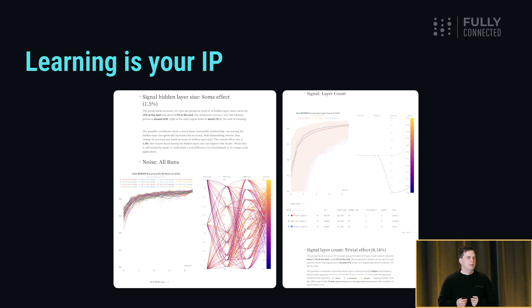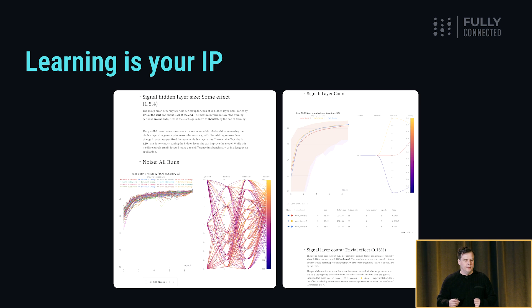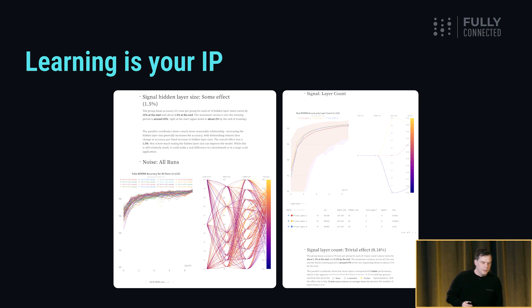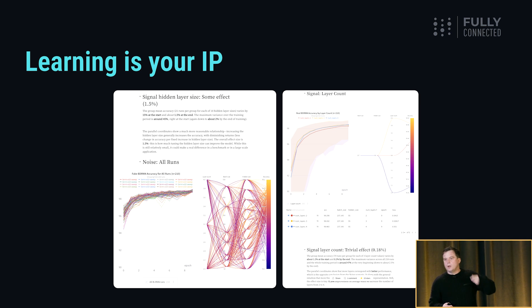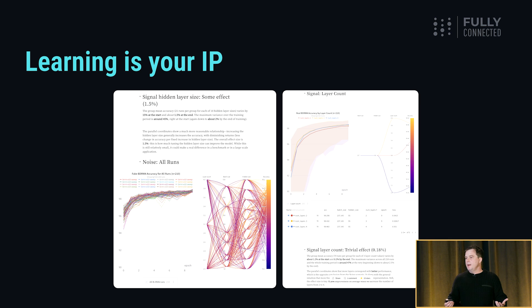You might think the models are your IP, but you can't actually inspect the model. Despite a mountain of work on explainability, these models are still mostly black boxes. But there's the learning along the way as you develop the model that helps you build better models — that's critical to your success. Most companies don't track or save the things they learn along the way in any kind of organized system, and that means they're throwing away their most valuable IP.